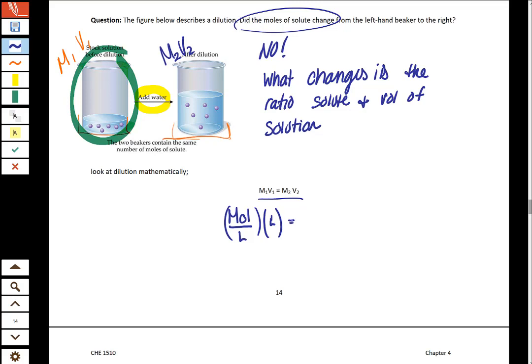And then when we look at M2 and V2, M is molarity, moles over liters. So what this is saying is your liters end up canceling out. And so your final statement is that moles equals moles. Which is mathematically what we said up here. That there's no change in the moles or the total amount of solute. Rather, what's changing is the volume and the ratio between the moles and the volume.